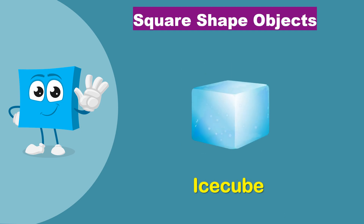This is an ice cube. Ice cube is a small block of ice which is square in shape. We can fill an ice tray with water and then freeze it to get ice cubes. They are put into drinks to make them cold.